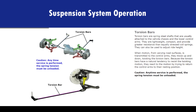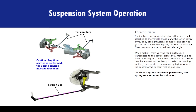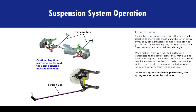Torsion bars are spring steel shafts that are usually attached to the vehicle chassis in the lower control arms. They are lightweight, compact, and provide greater resistance than equally stressed coil springs. They can also be used to adjust ride height. When motion from varying road surfaces is transmitted to the control arms, they move up and down, twisting the torsion bars. Because the torsion bars have a natural tendency to resist the twisting motion, they react by trying to return the control arms to their resting position. Caution: anytime service is performed, the spring tension must be unloaded.